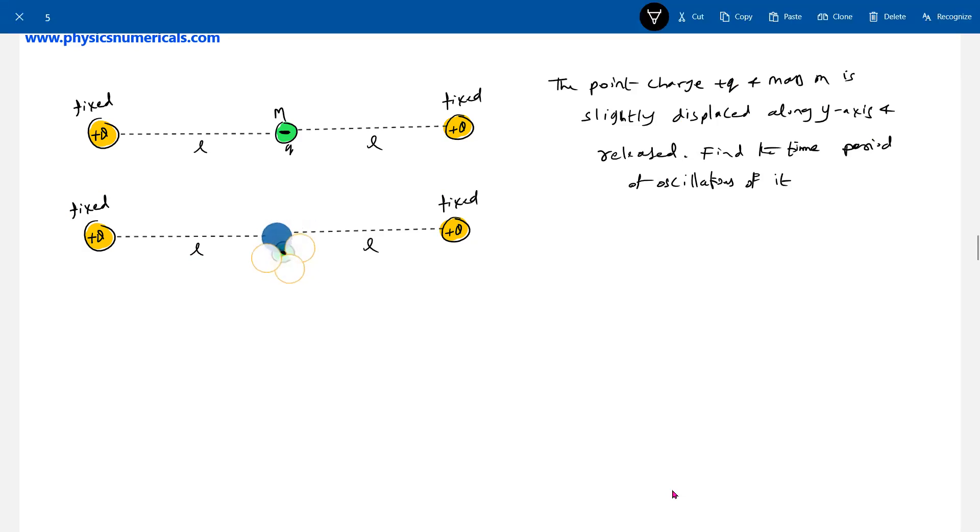Let me show that. So this particular point charge is going to execute SHM along the y-axis. If we displace it and y is comparable to l, it will be oscillatory motion.